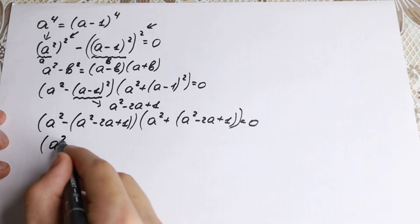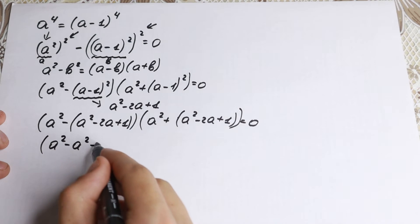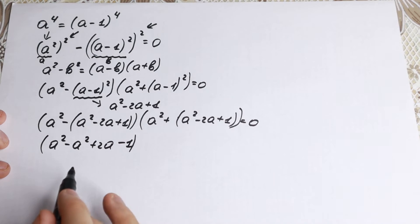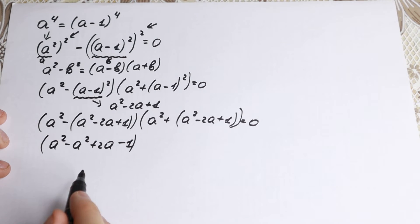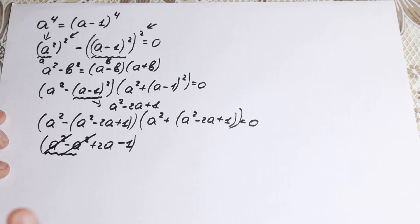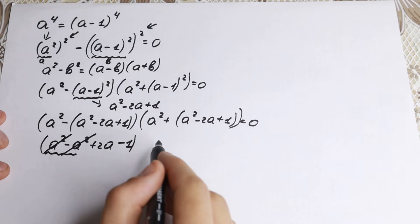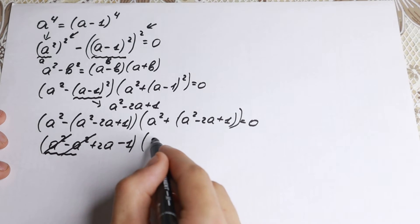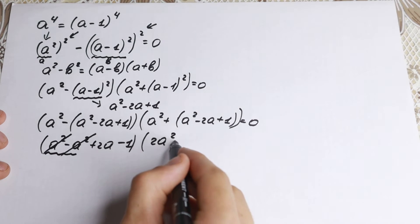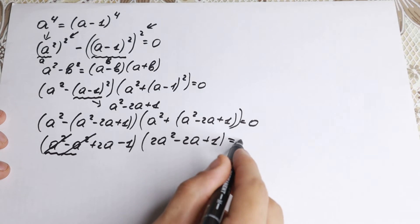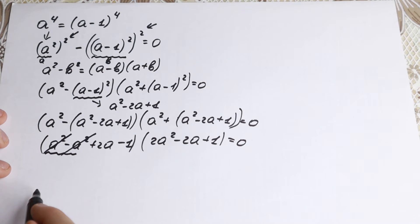What we're going to do next: let's open our parentheses. The first gives a-squared minus a-squared plus 2a minus one. This is really good because a-squared minus a-squared equals zero, so we can cancel those. The second parenthesis gives a-squared plus a-squared, which is 2a-squared minus 2a plus one, equal to zero.